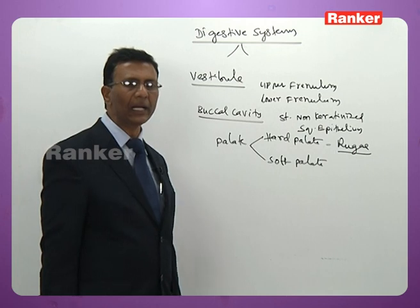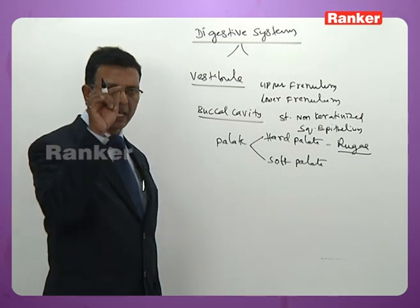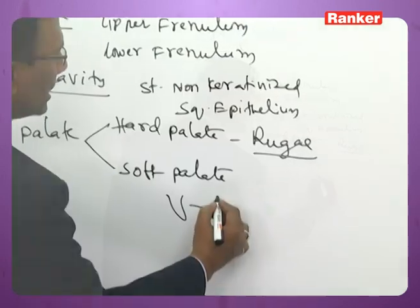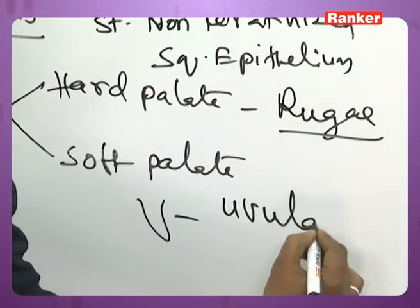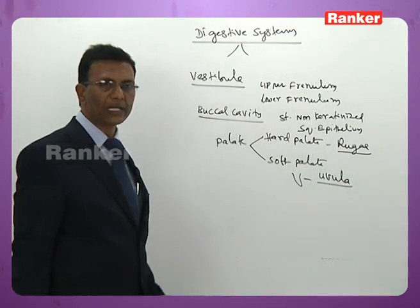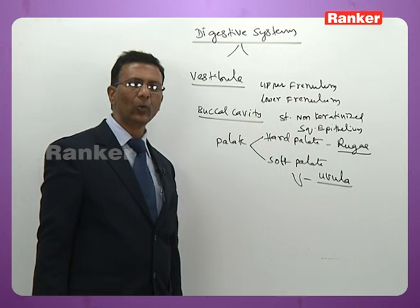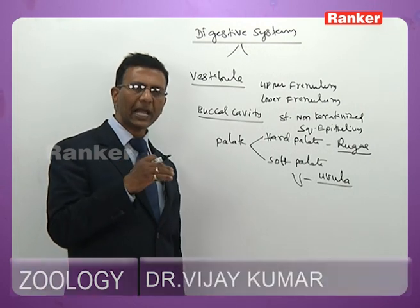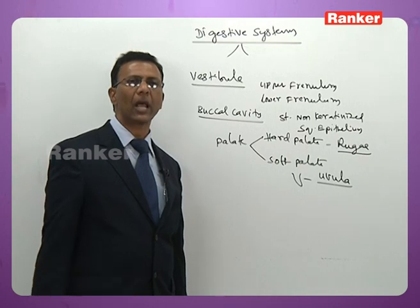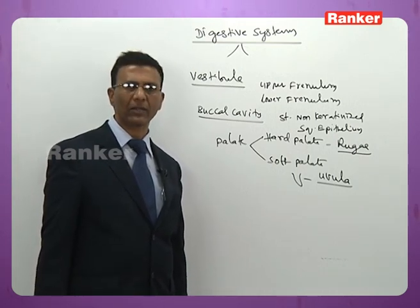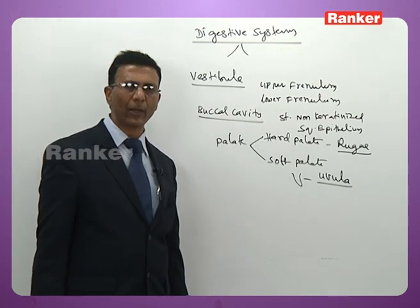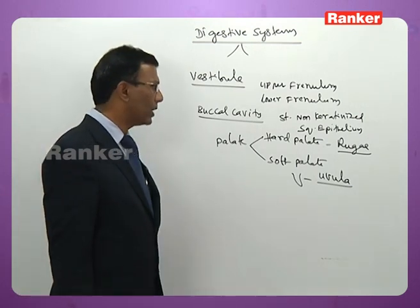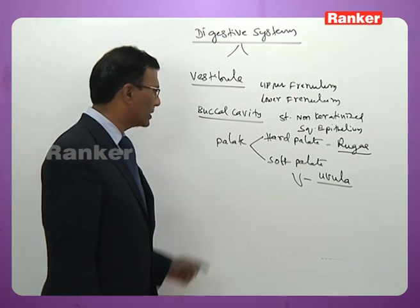The soft palate hangs downwards into the buccal cavity in the form of a fleshy projection called the uvula. The function of the uvula is important: while swallowing, the uvula is pushed upwards to block the nasopharynx and thereby prevent the entry of food into the nasopharyngeal region.